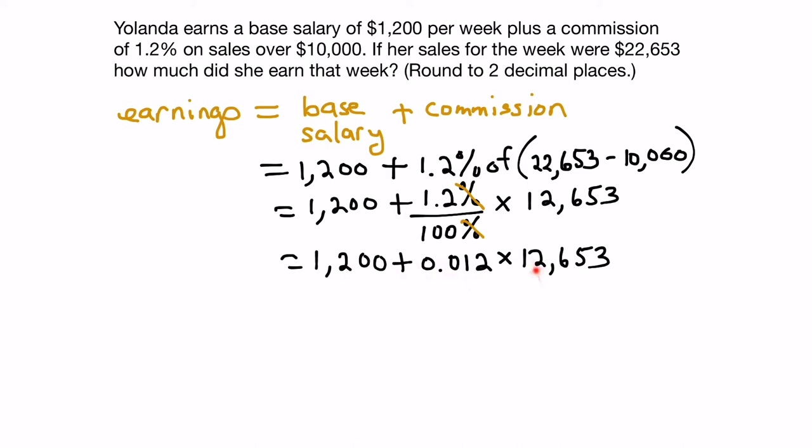So now we apply the rules of BEDMAS. We have to multiply before we add. Let's move it over. We've got 12,653 times 0.12, which would be multiplied by, let's put 12 for now.